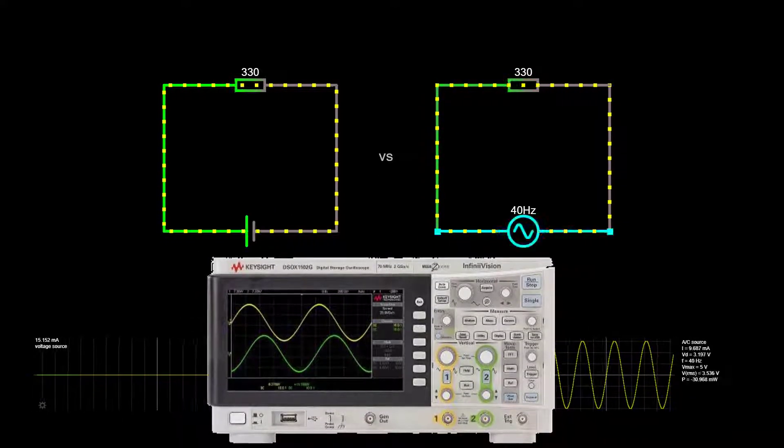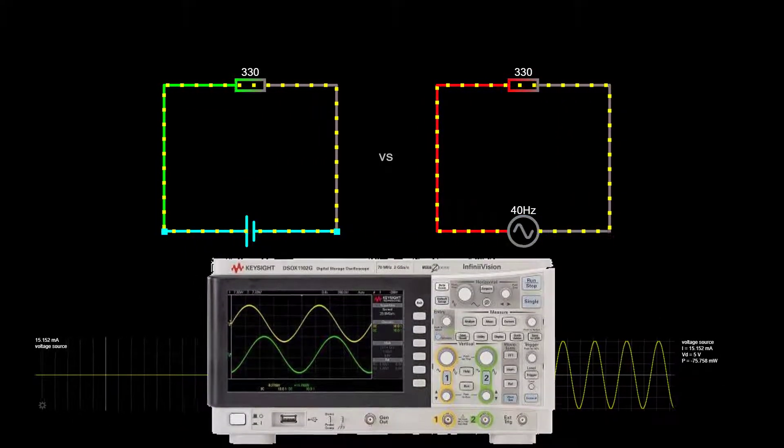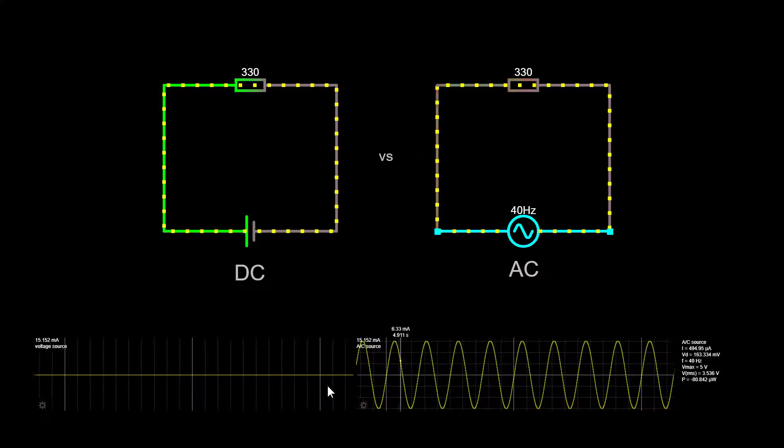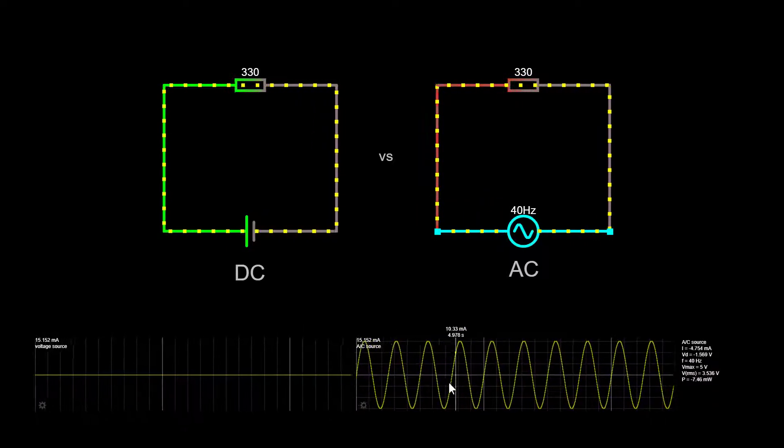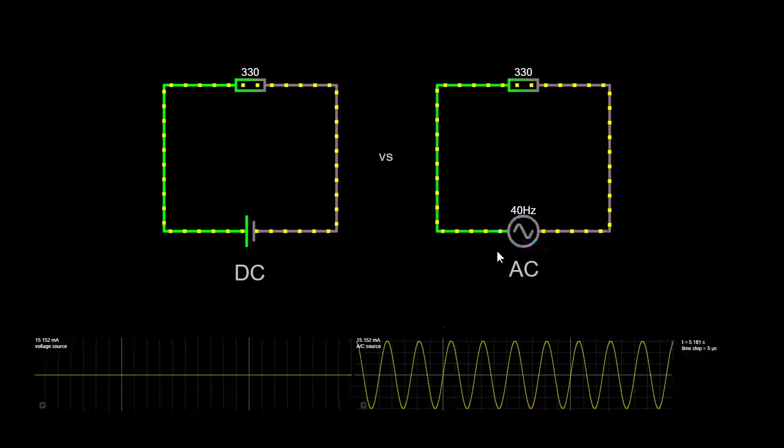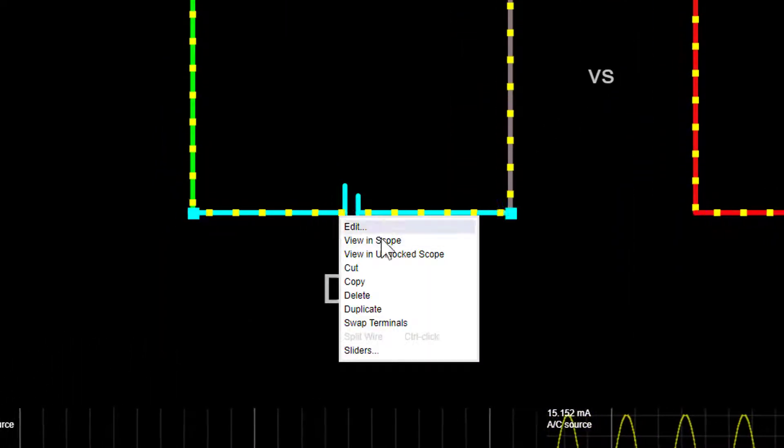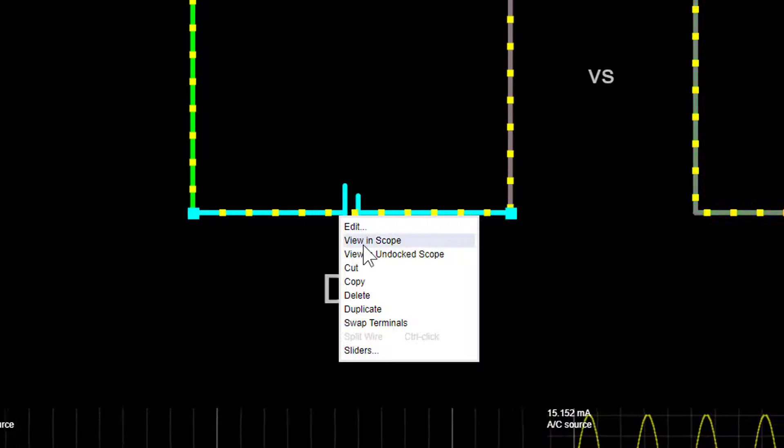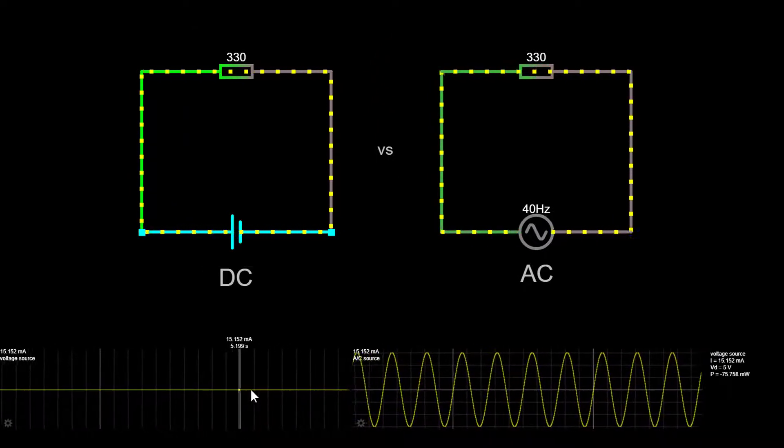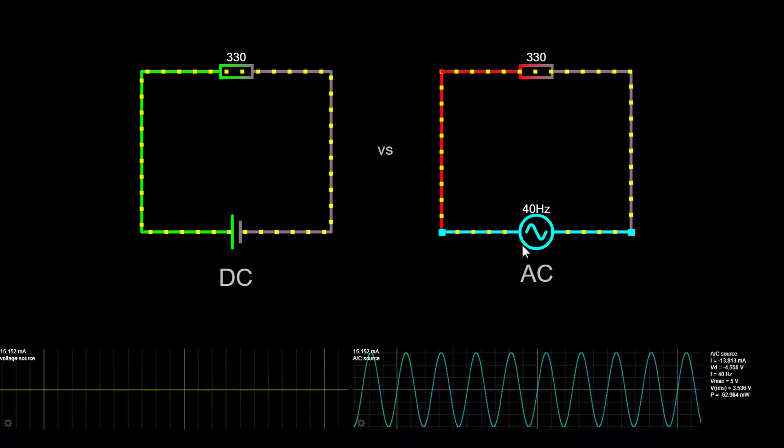An oscilloscope is a laboratory instrument commonly used to display and analyze the waveform of electronic signals. In fact, the device draws a graph of the instantaneous signal voltage as a function of time. Of course, in the simulator you won't see an oscilloscope with its connections to the circuit, because we can easily do that by just right-clicking on our voltage source and click on view in scope. So the first graph shows how the current flows in the first circuit, and the second one shows how the circuit flows in the second circuit.